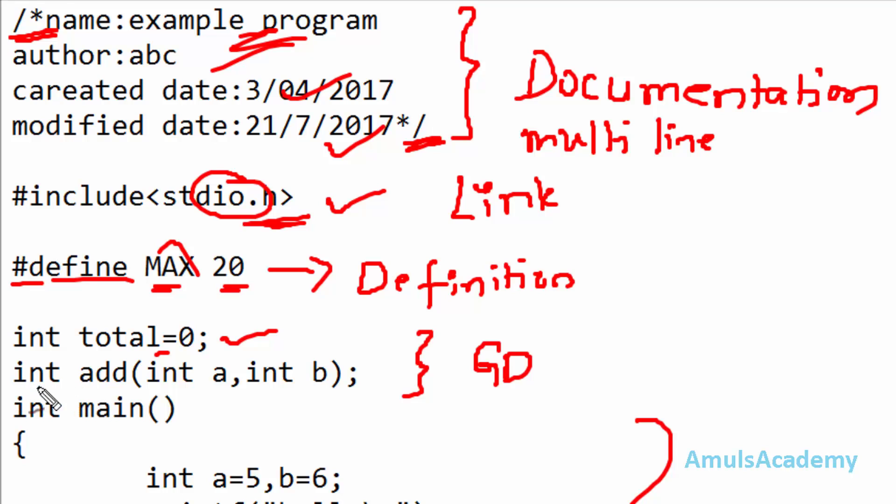Next, here we can see int add(int a, int b) - this is the user-defined function declaration. We are telling the compiler that we are using a user-defined function, so this is its declaration.